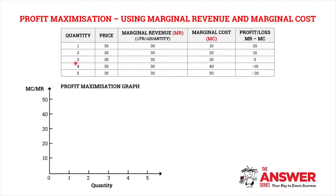At quantity 3, our marginal revenue is exactly the same as our marginal cost. When that happens, Grade 12s, we refer to it as the profit maximization point. Where your marginal revenue is equal to your marginal cost, that is known as profit maximization.